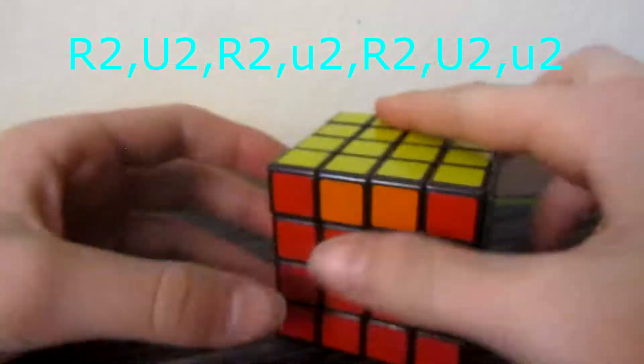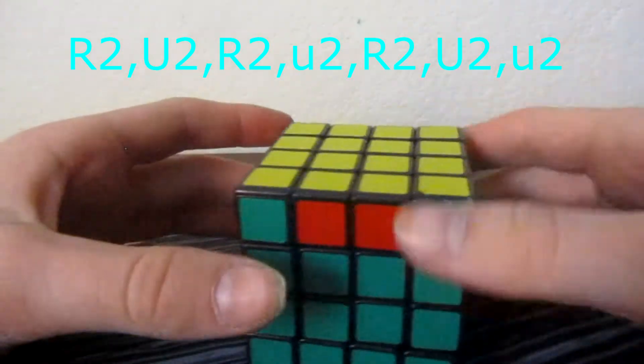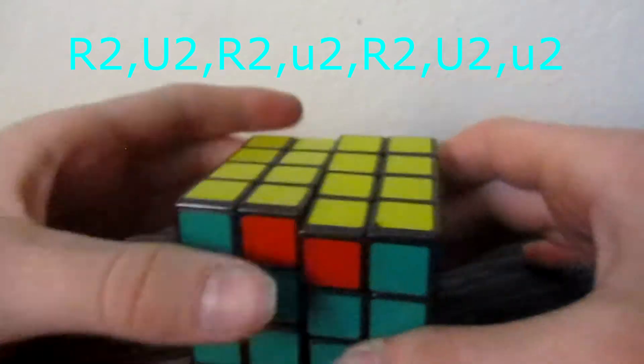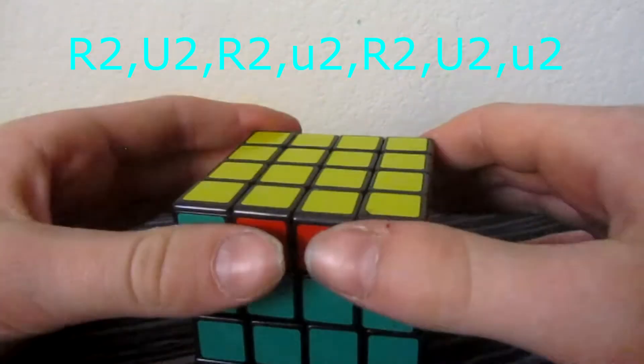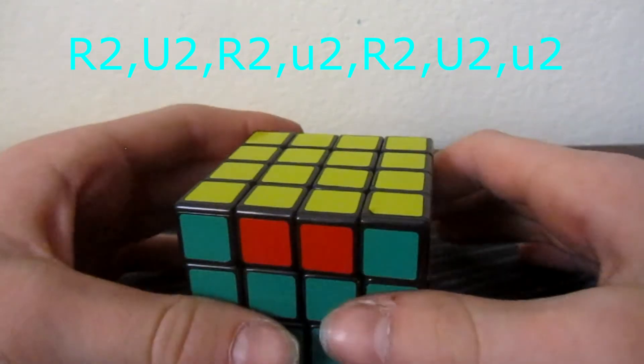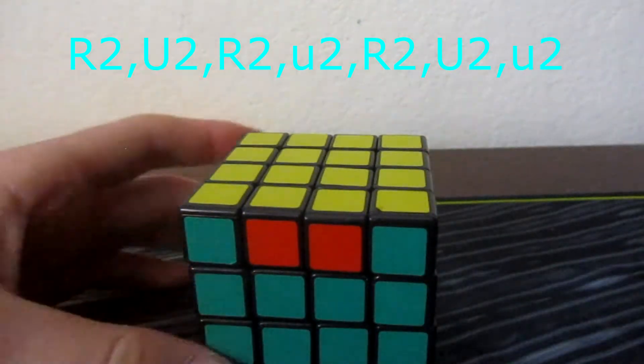An easy way to remember that case is pretty much the only thing you move is the right and the top. So you got to remember is R up, R double up, R up, double up. That's pretty much it.